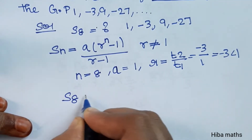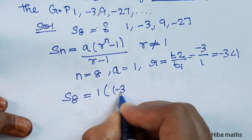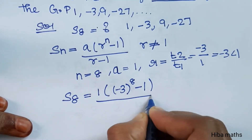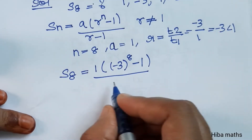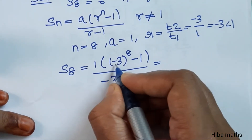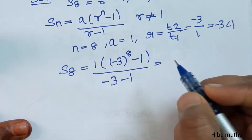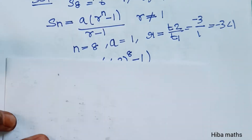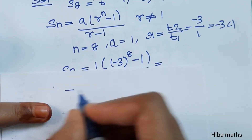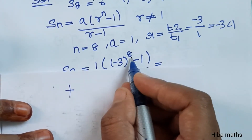Substituting into the formula: S(8) = 1 × (3^8 - 1) divided by (3 - 1). So we have 1 into (3 power 8 minus 1) divided by 2.